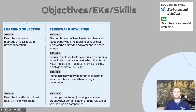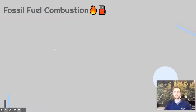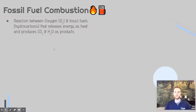The skill we'll practice at the end of today's video is describing an environmental problem specifically related to fossil fuels. The first thing we have to discuss is what a fossil fuel combustion reaction actually looks like. This is a reaction between oxygen and fossil fuels, which are just hydrocarbons — molecules made up of carbon and hydrogen. When these two molecules interact, they release a lot of energy as heat, and that's the really valuable aspect of fossil fuels.